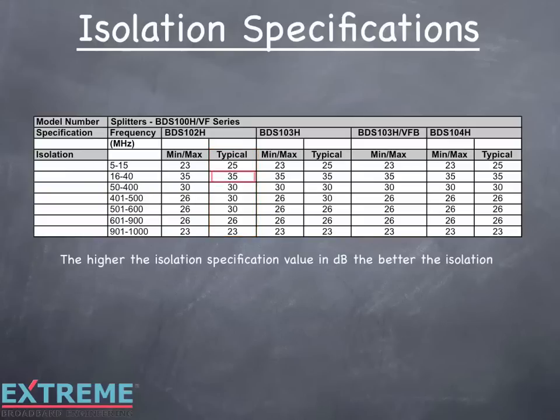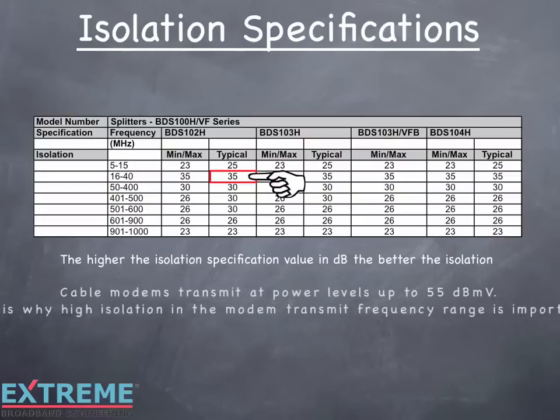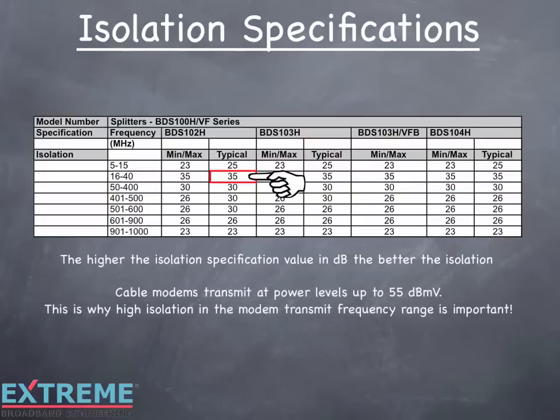One area to note is the specification in the 16 to 40 MHz bands, where the isolation specification is better by 5 dB. Typical signal levels feeding these devices in the forward are in the mid-teens to low 20 dBmV range. On the return, the typical signal range from cable modems is much higher, around 35 to 55 dBmV. The higher isolation at these frequencies lowers the potential for these high levels interfering with other port signals.